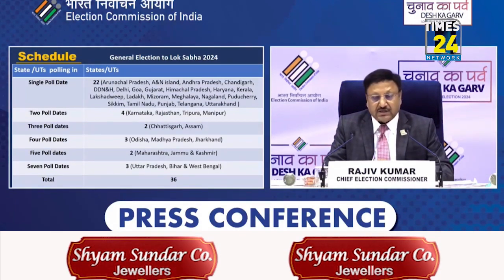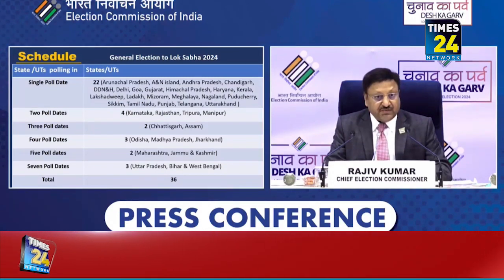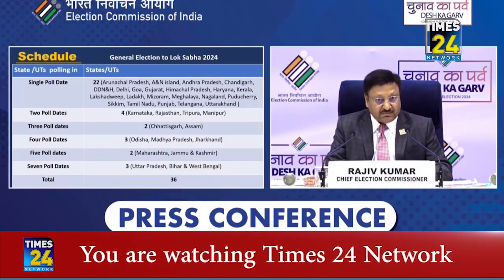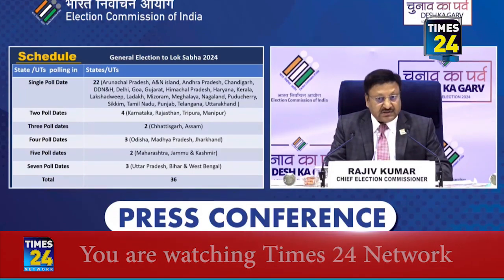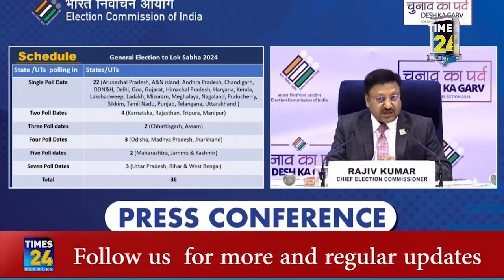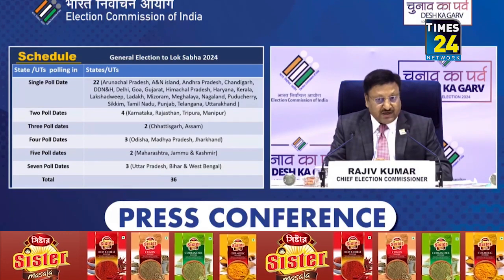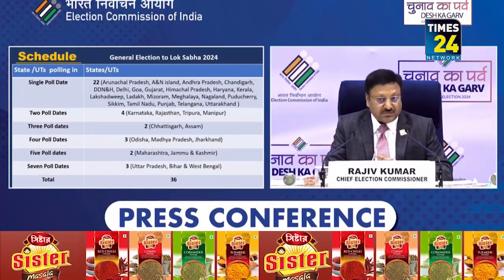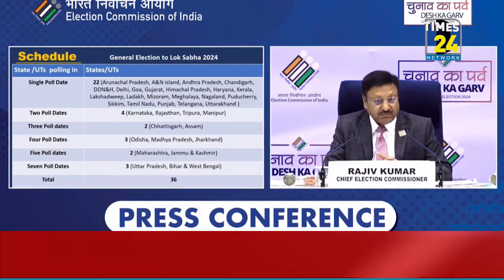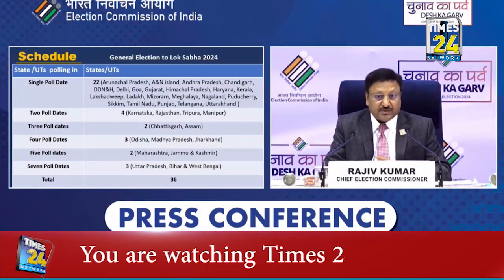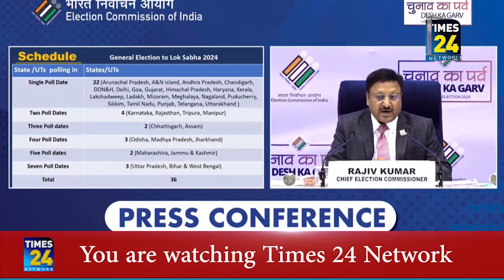Karnataka, Rajasthan, Tripura, Manipur will go in 2 phases. 3 phases mein 2 jayenge. 4 phase mein 3 jayenge — Odisha, Madhya Pradesh, Jharkhand. Five phase mein 2 jayenge — Maharashtra and Jammu Kashmir. Jammu Kashmir ki har parliamentary constituency ke liye ek phase hogi. Aur 7 phase mein 3 jayenge — Uttar Pradesh, Bihar, and West Bengal.